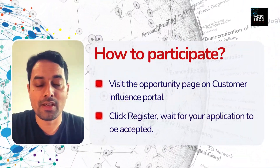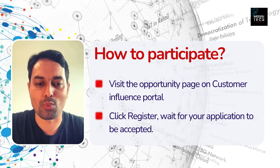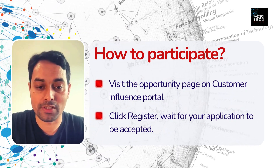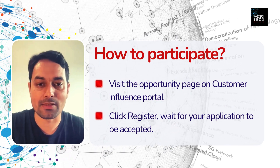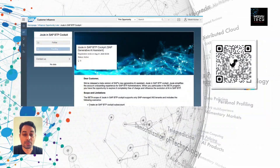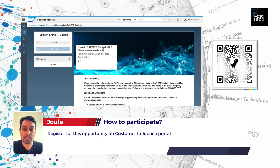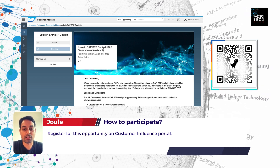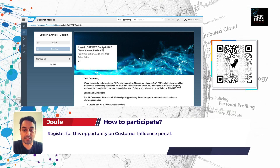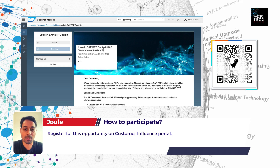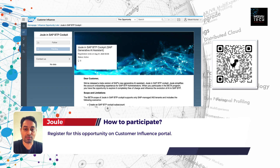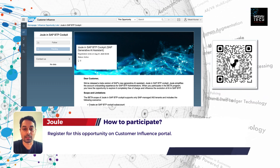So how can you participate? You can participate in a very simple way. You just need to visit the opportunities page on the customer influence portal and click on the register button — it's that simple. Then you need to wait for approval of your application. I have created a QR code where you can directly land on this particular page. You might have to sign in with your S user, and then you will see this screen. Just click on register. My screen shows pending because it's waiting for approval. Once the approval is done, you will be part of it and you'll get an email confirming the same.